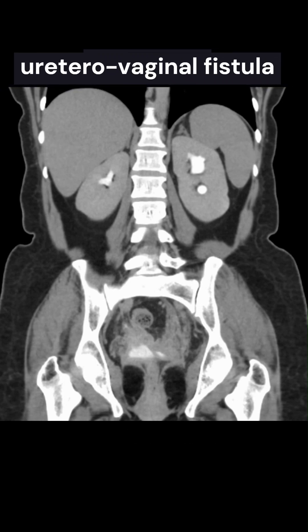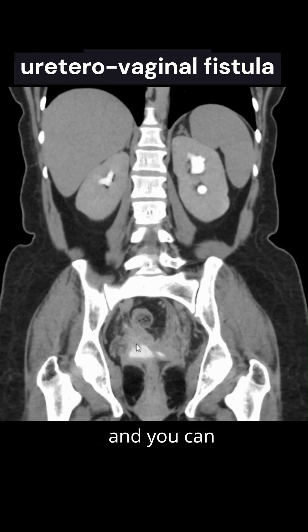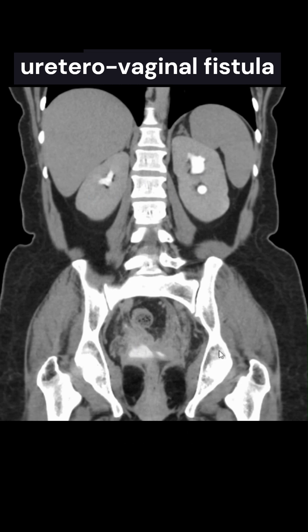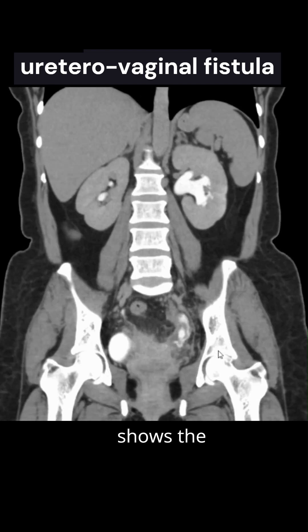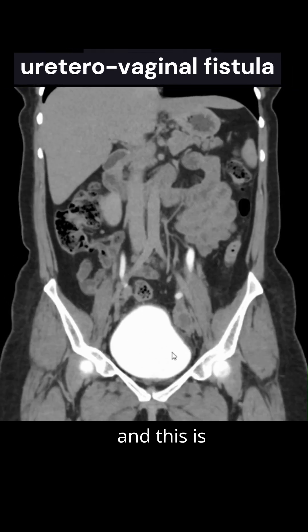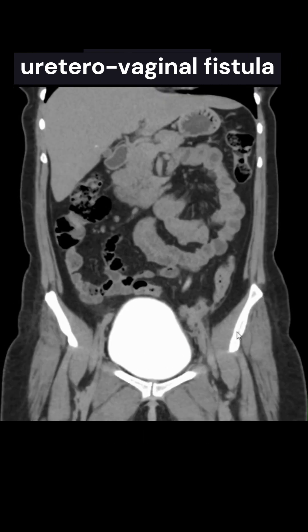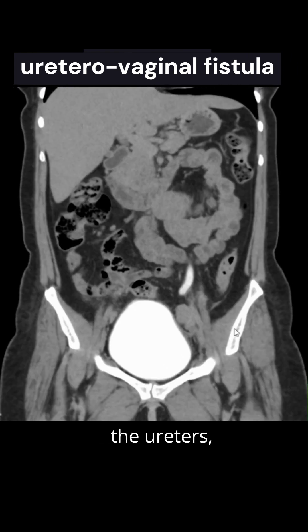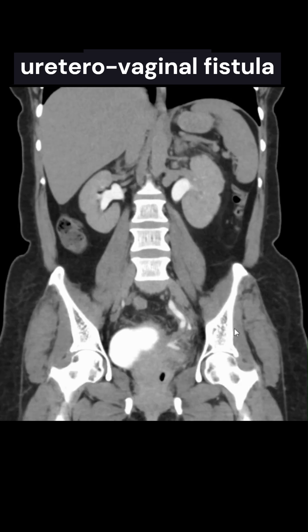This is a case of uretero-vaginal fistula. Here you can see the delayed phases — some contrast is visible which doesn't appear to be in the bladder. The renal pelvis shows contrast on these delayed phase images, this is the bladder with contrast in it, and these are the ureters as we move down and trace them.